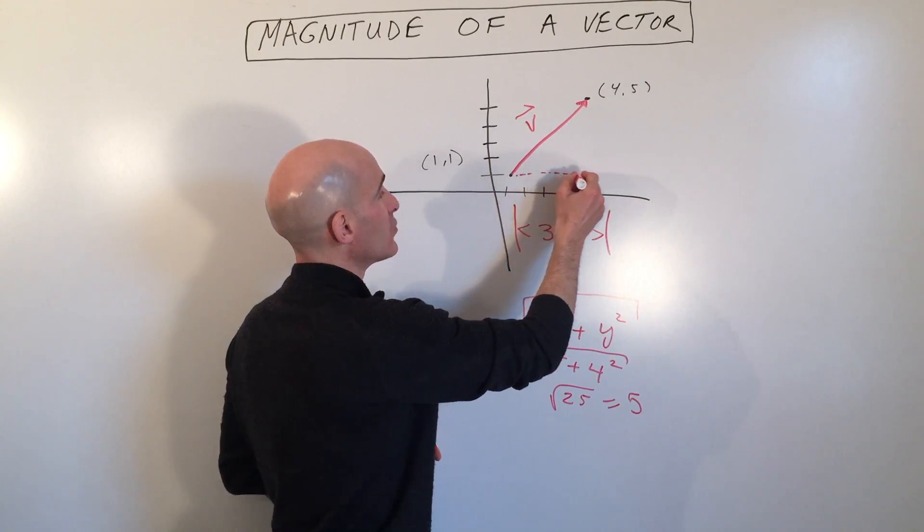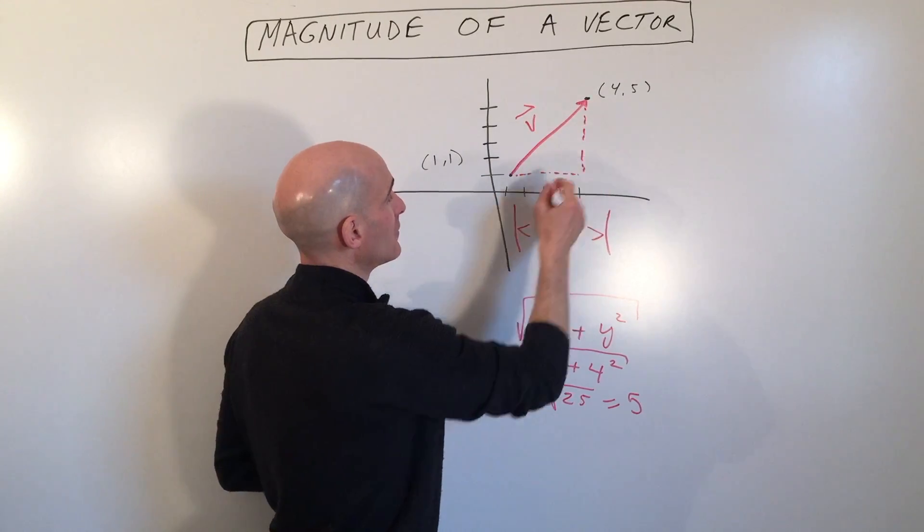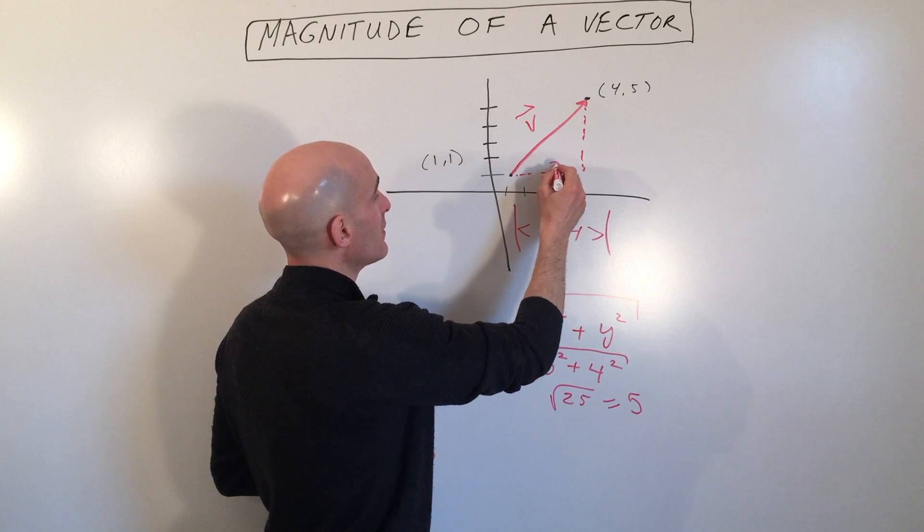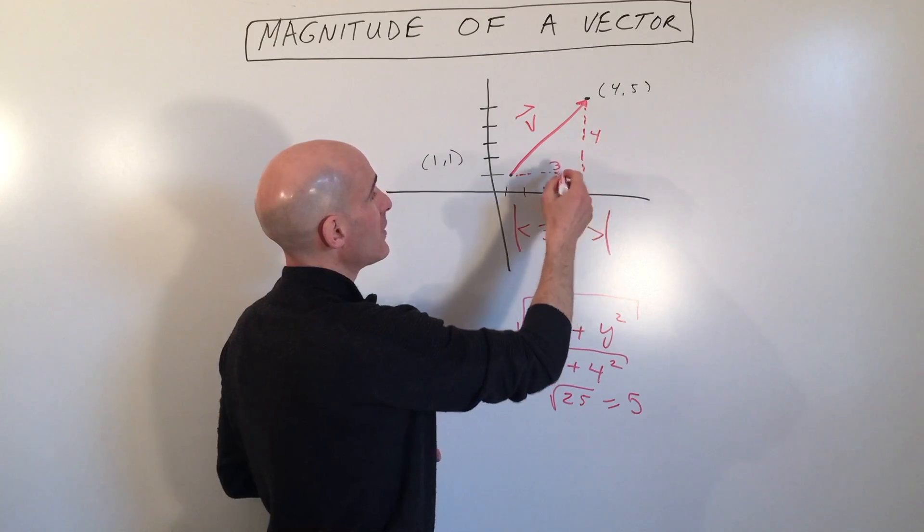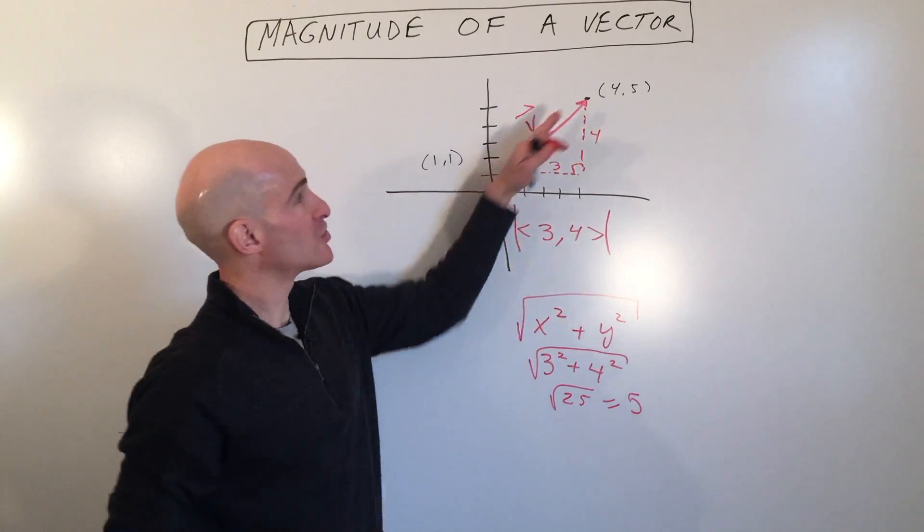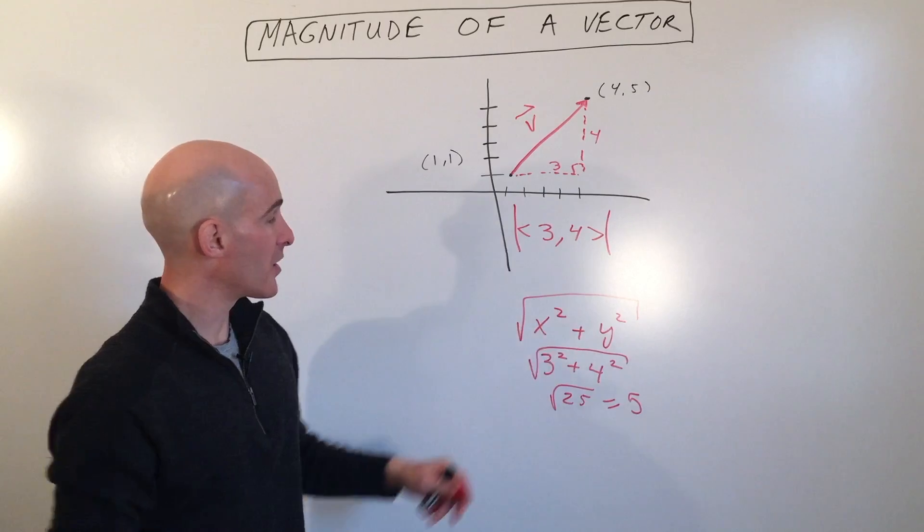If you make this into a right triangle, this distance is 3, this distance here is 4. There's your right angle there. And you're just doing your Pythagorean theorem, a squared plus b squared equals c squared.